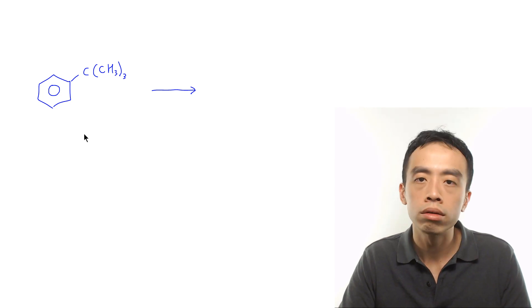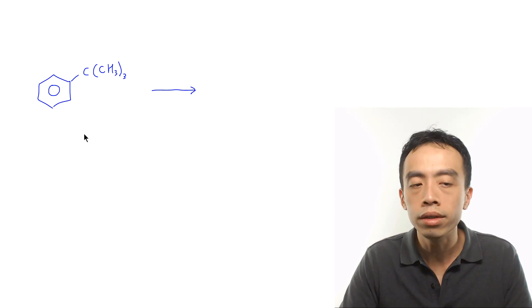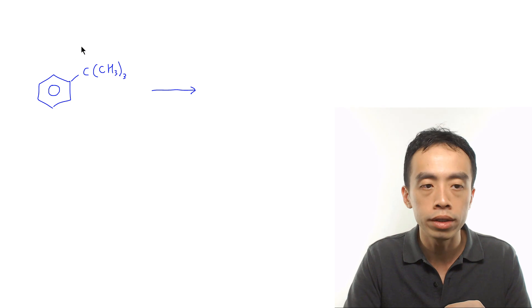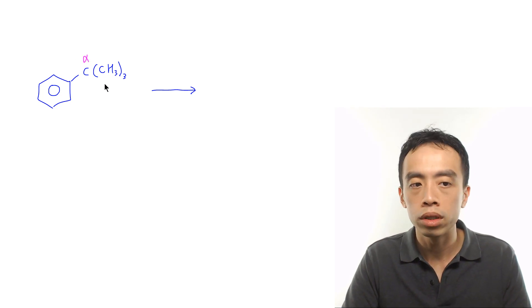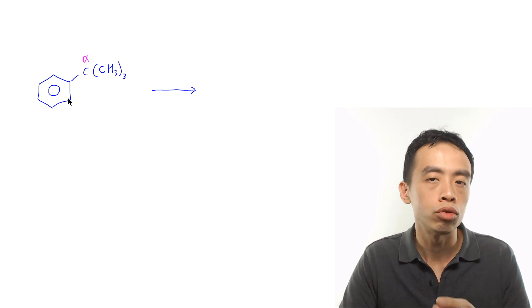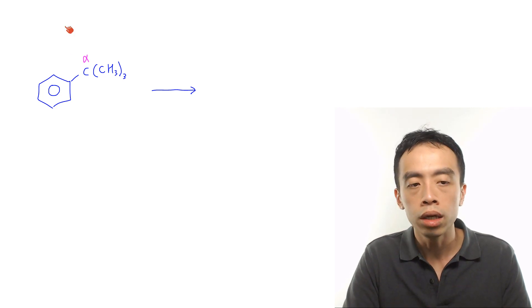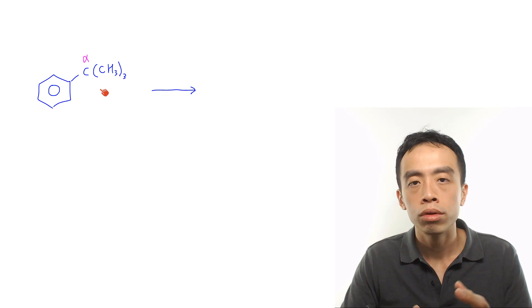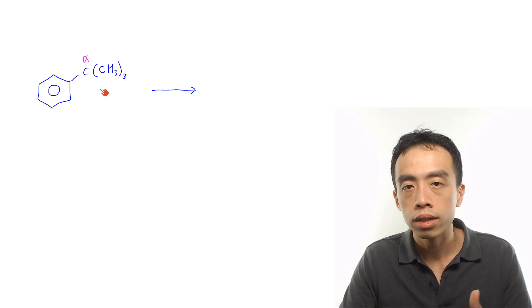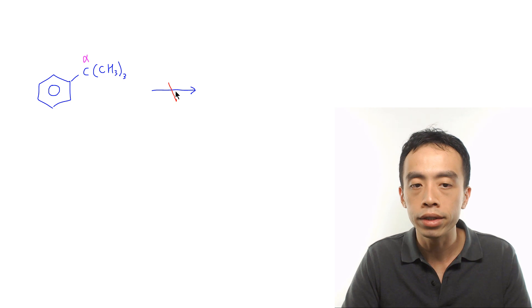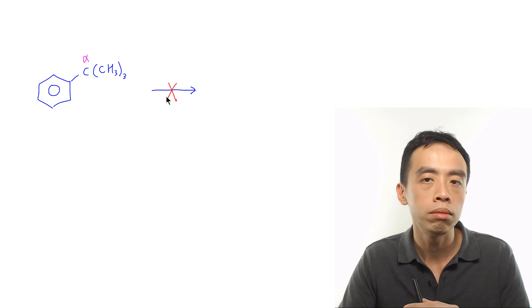For the third example, focusing on the alpha carbon directly attached to benzene, this alpha carbon has no hydrogen because it is attached to three methyl groups. Since the alpha carbon carries no hydrogen, it cannot be oxidized to give benzoic acid.